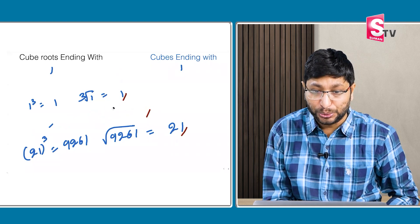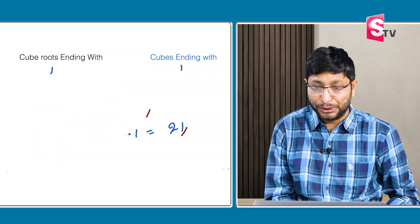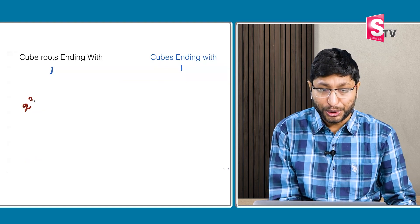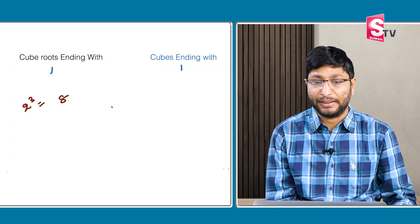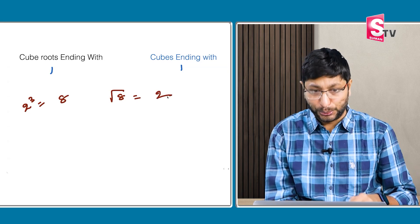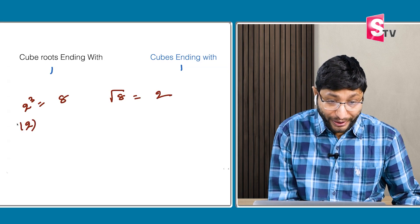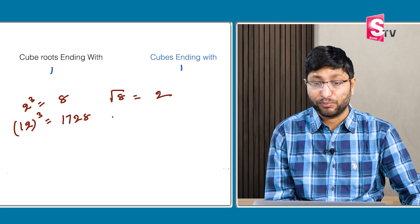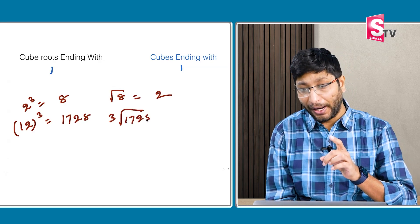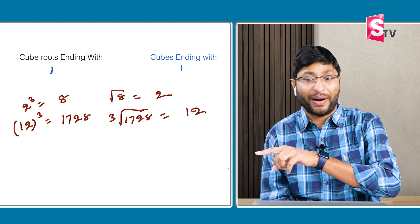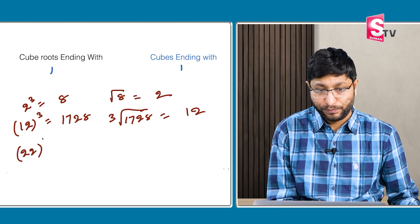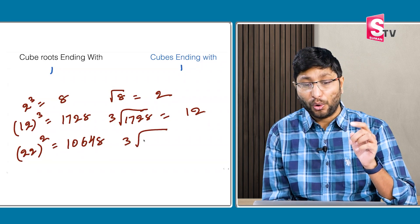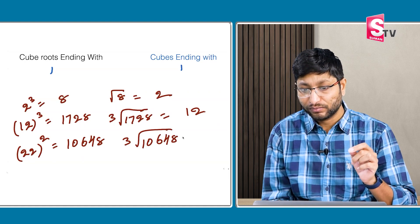Now let's look at 2. 2 cube is 8, so the cube root of 8 is 2. 12 cube is 1728, so the cube root of 1728 is 12. 22 cube is 10648, so the cube root of 10648 is 22. If you observe this table: when the cube ends with 8, the cube root ends with 2.